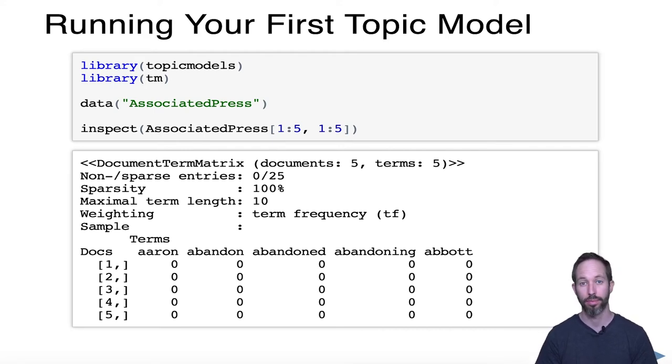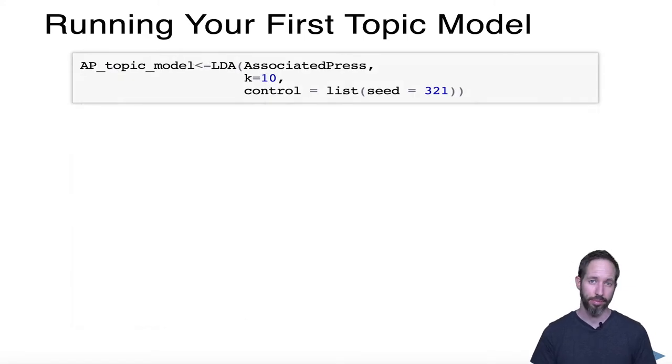Remember that it takes quite a bit of work to get to a document term matrix. You have to take a lot of text preprocessing steps. You may be dealing with character encoding issues. If none of those terms make sense to you, again, go back and check out the basic text analysis video.